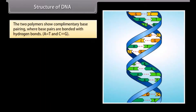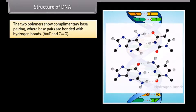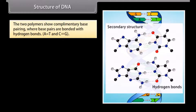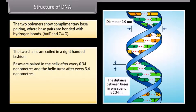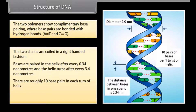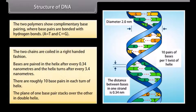The two polymers show complementary base pairing, where base pairs are bonded with hydrogen bonds. The two chains are coiled in a right-handed fashion. Bases are paired in the helix after every 0.34 nanometres, and the helix turns after every 3.4 nanometres. There are roughly 10 base pairs in each turn of the helix. The plane of one base pair stacks over the other in the double helix.